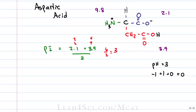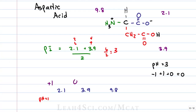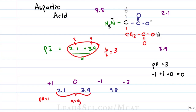Using the long-way trick for aspartic acid: line up pKa values as 2.1, 3.9, and 9.8. At pH 1 (fully protonated): amine is plus one, carboxy side chain is 0, and carboxy is 0 — net charge of plus one. As pH rises past each pKa, charge drops by one: plus one, then zero, then minus one, then minus two. We get zero in between 2.1 and 3.9, confirming we average those two to get the PI.